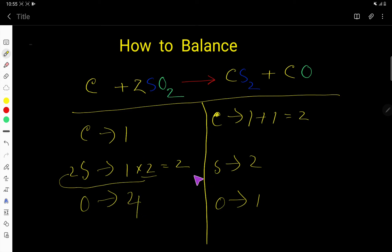Sulfur 2-2 is balanced. Oxygen: 4 here, 1 here. To balance oxygen, multiply CO by 4, giving us 4. This 4 must come before oxygen. So you place 4 here. Now you have 4 carbon.